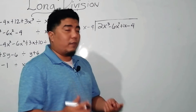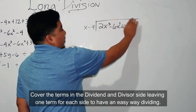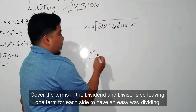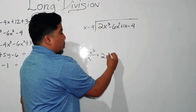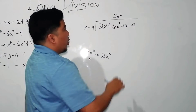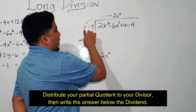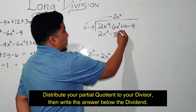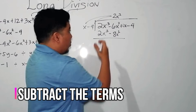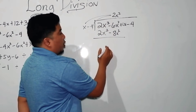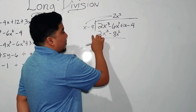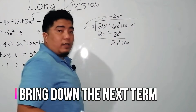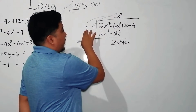Now we can continue the division. First, cover the terms, leaving 2x cubed divided by x, which equals 2x squared. Put 2x squared in the quotient. Then 2x squared is multiplied: 2x squared times x is 2x cubed; 2x squared times negative 4 is negative 8x squared. Then you subtract. 2x cubed minus 2x cubed is 0. Negative 6 minus negative 8 is positive 2x squared. Bring down 0x.